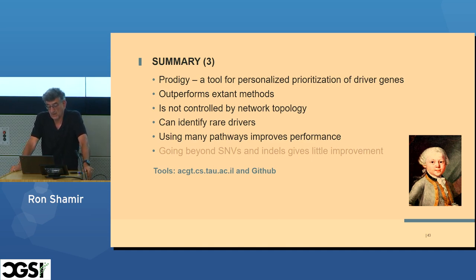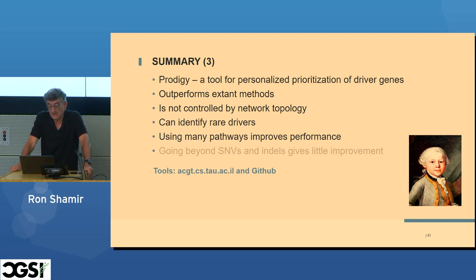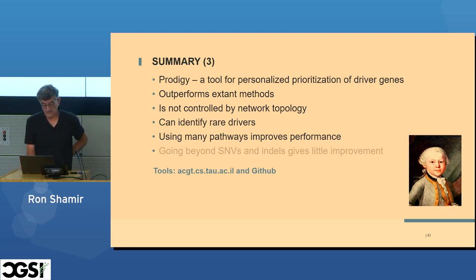To summarize, PRODIGY is a new algorithm for personalized prioritization of driver genes that performs better than existing methods and, unlike them, is not controlled by network topology — a problem everyone should be aware of when using global PPI networks. The key idea was to use signals across separate but multiple pathways. The algorithm is available on GitHub.